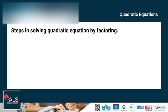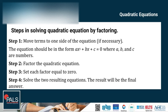Let's proceed to the steps in solving quadratic equations by factoring. Step 1: Move terms to one side of the equation if necessary — the equation should be in the form ax squared plus bx plus c is equal to 0, where a, b, and c are numbers. Step 2: Factor the quadratic equation. Step 3: Set each factor equal to 0. Step 4: Solve the two resulting equations. The result will be the final answer.